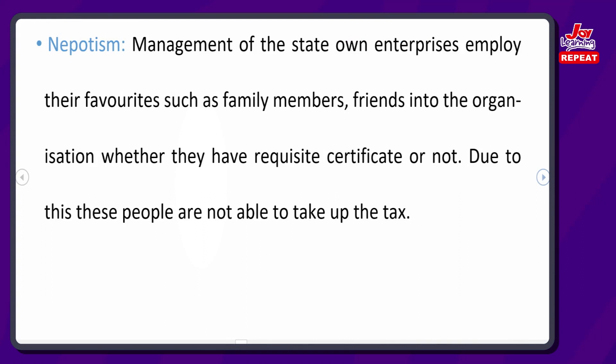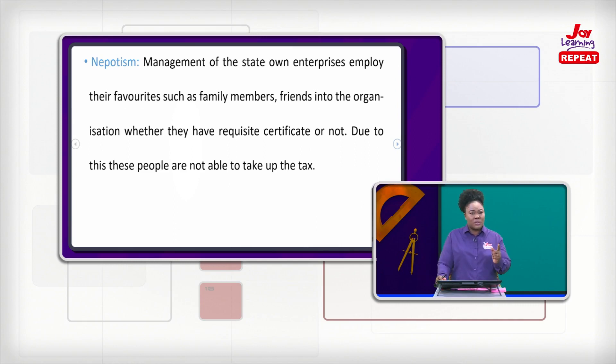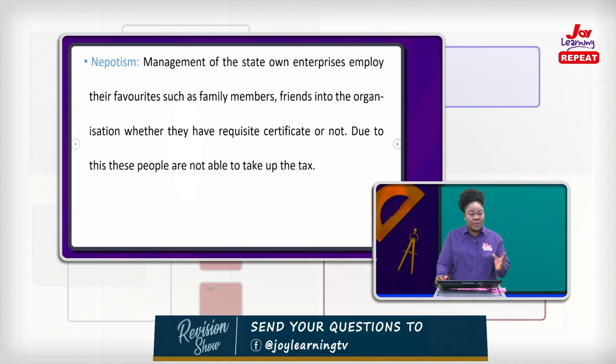The next problem is nepotism. Management of the state-owned enterprise employ their favorites — such as family members and friends — into the organization whether they have the requisite certificate or not. For example, if your mother is a headmistress and gives you an administrative position even though you didn't get the required certificate, you will fumble when you get there. Due to this, these people are not able to carry out their tasks effectively.